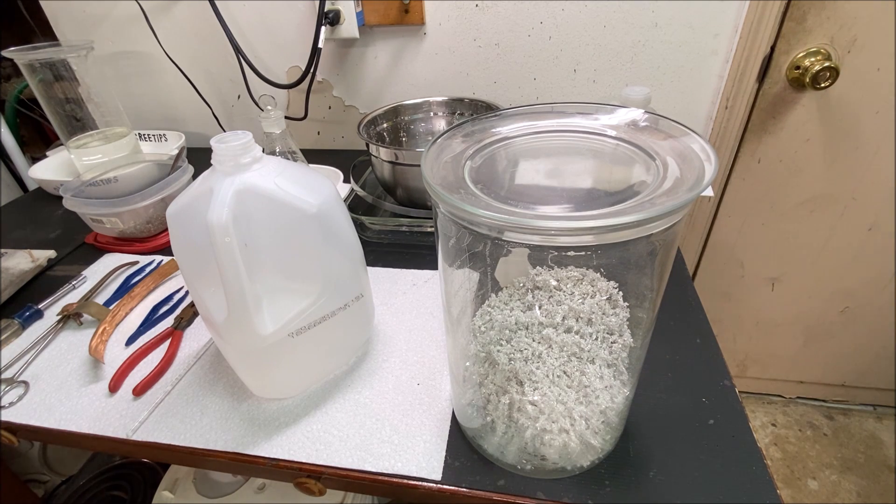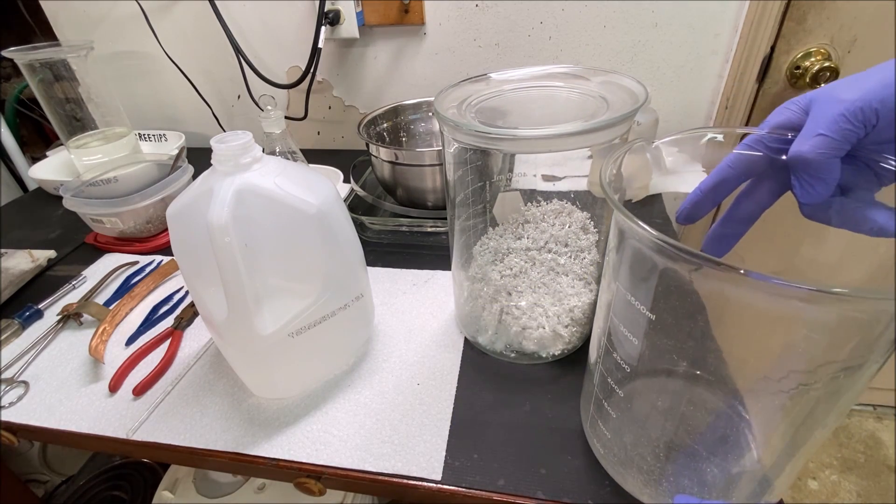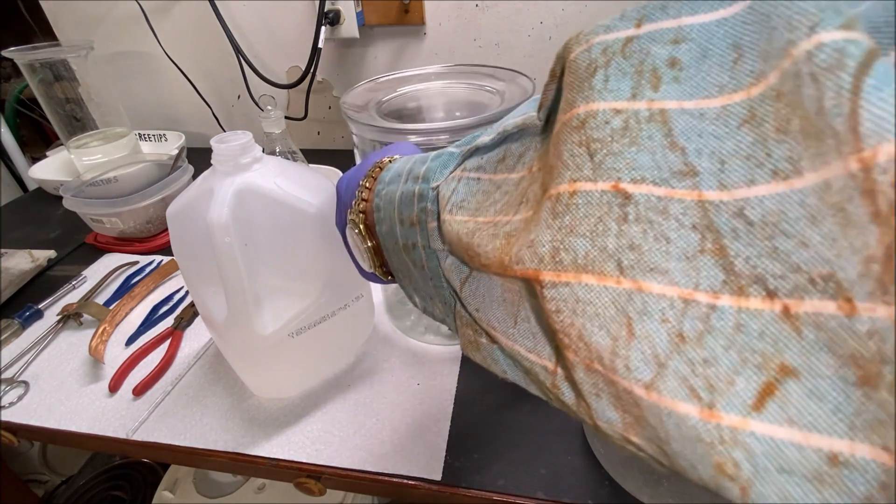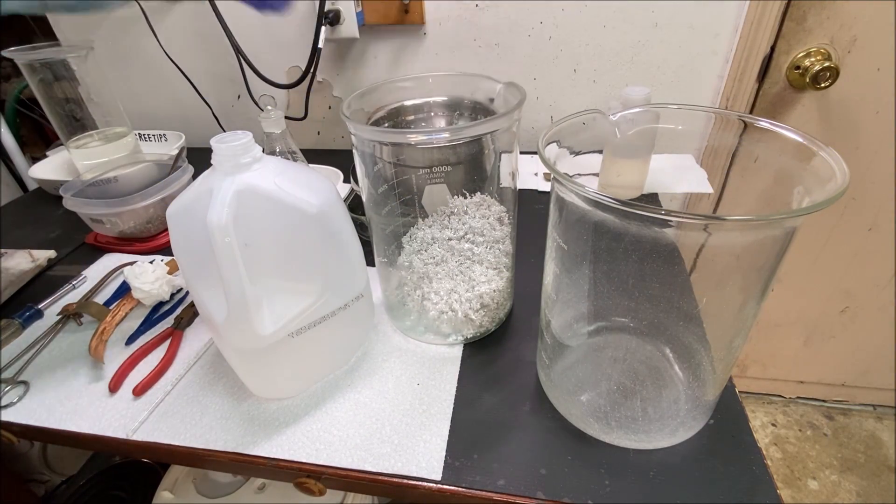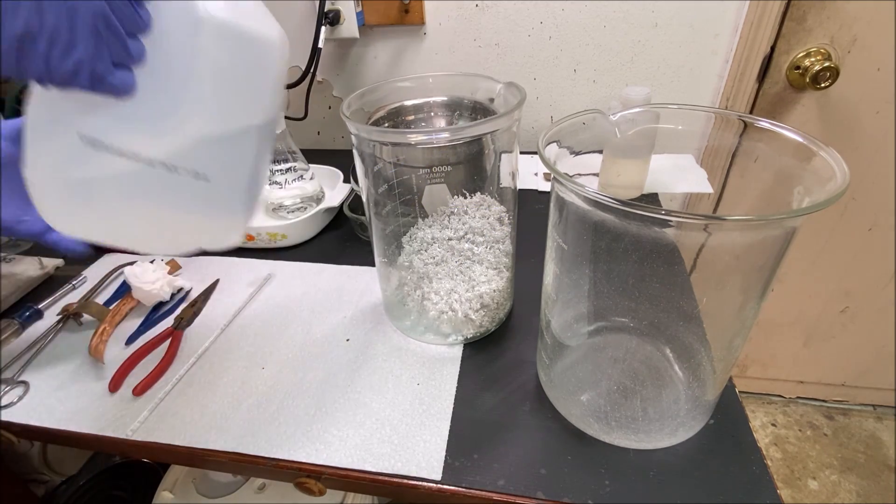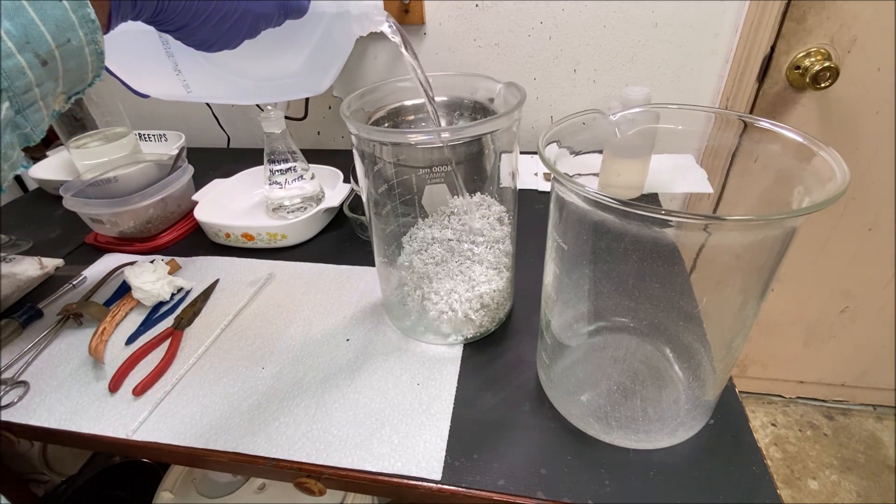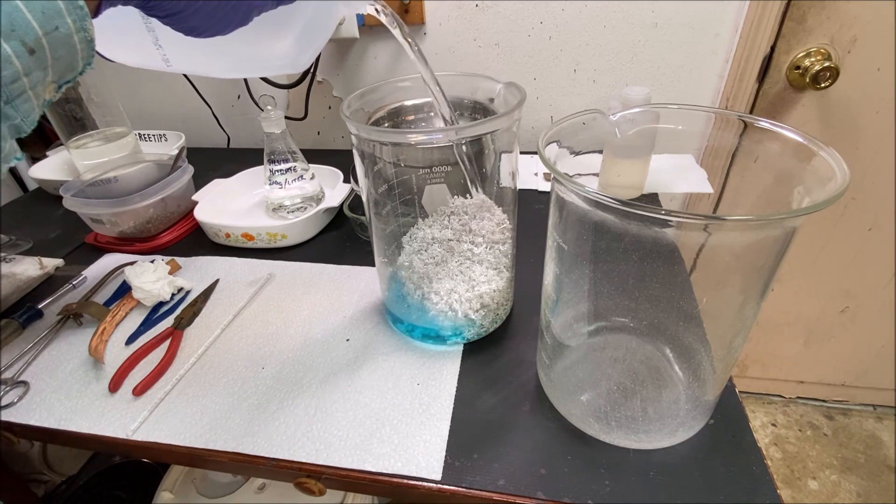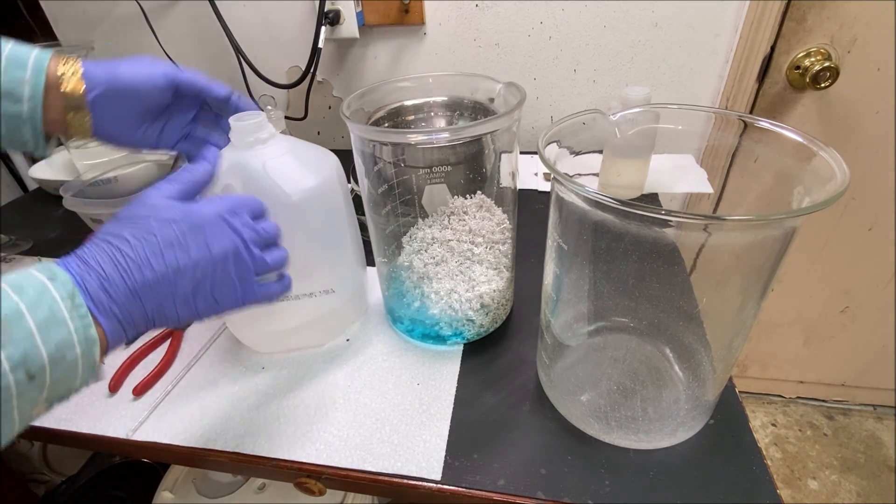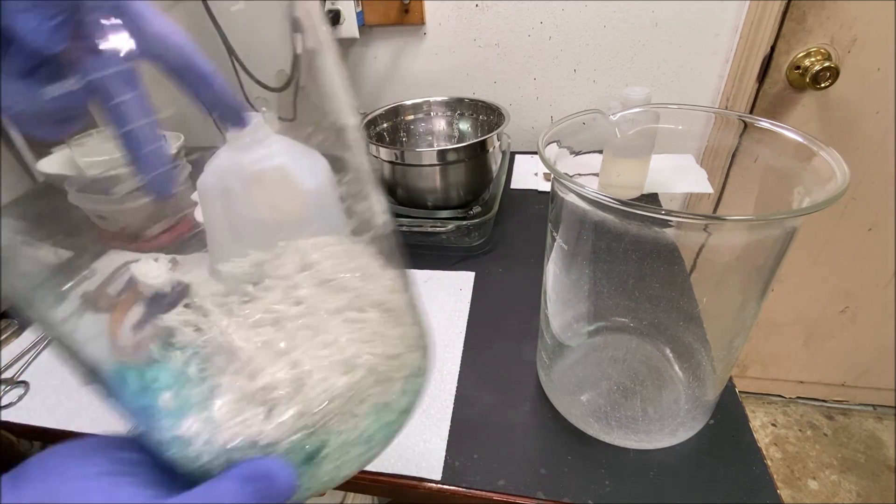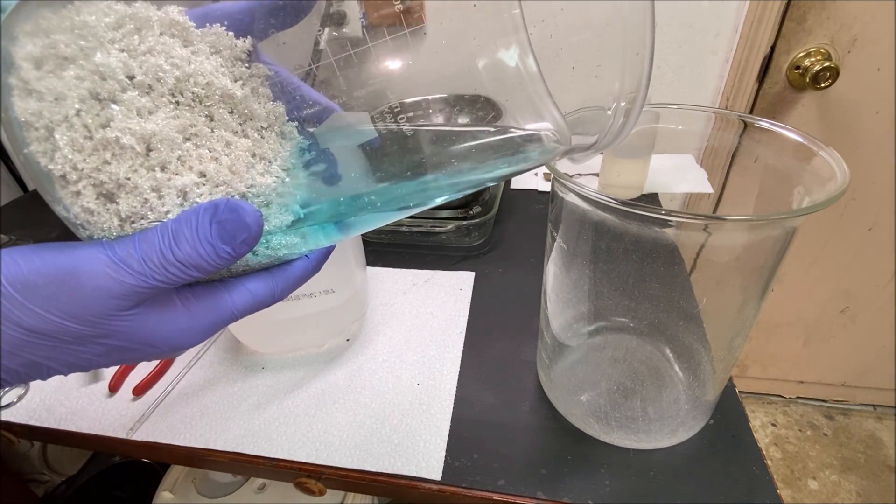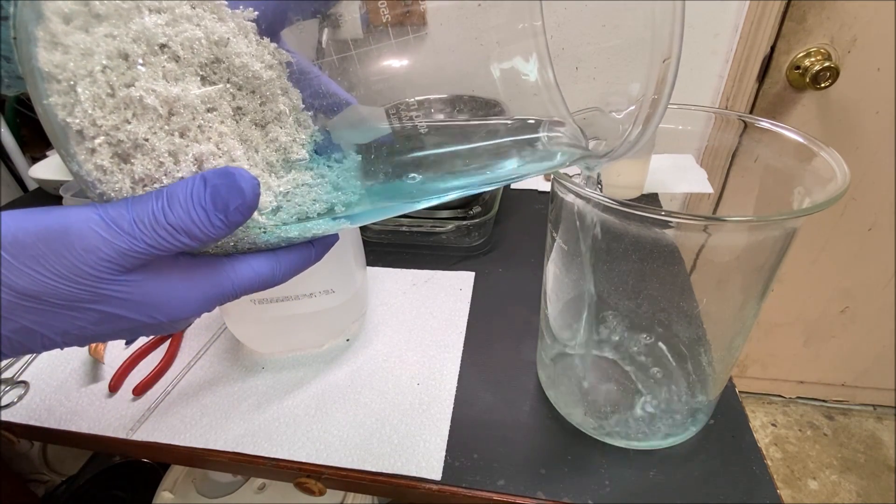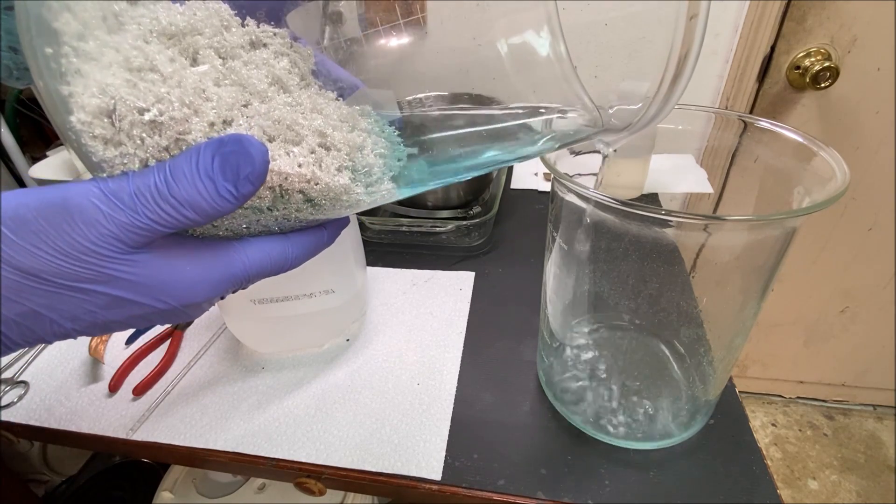I'm going to set this electrolyte out of the way here. We're going to reuse it a second time. Now what we'll do is I've got a beaker set here that we'll use to pour off the rinses from the silver in here. Just going to start it off with some cold distilled water. Just give it a rinse and then I'll pour that rinse off into the beaker. Save that liquid because it's going to have some silver in it.